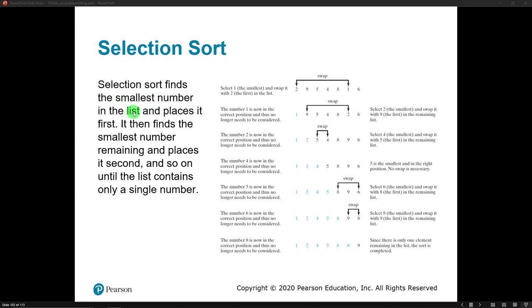It comes down to this: a selection sort finds the smallest number in the list, and then it places that number first. Then it goes and finds the second smallest number in the list and places it second. It goes and finds the third smallest number and puts it in the third spot. That's how it does it, it's just repetitive.